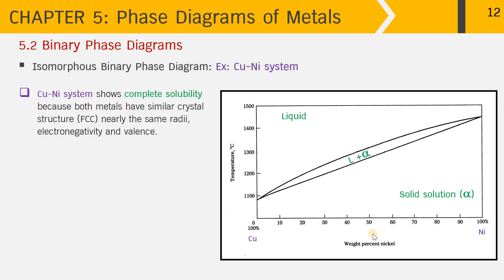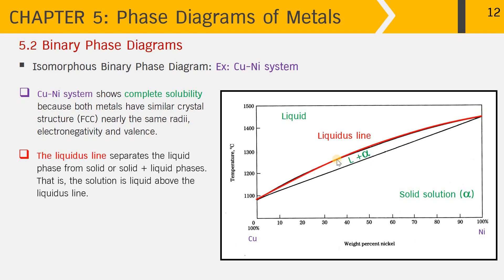On the x-axis is the composition based on weight percent of copper and nickel. Towards the left-hand side we have 100% copper, and towards the right-hand side we have 100 weight percent of nickel. Along the y-axis is the temperature. One point marks the melting point of pure copper and another marks the melting point of pure nickel.